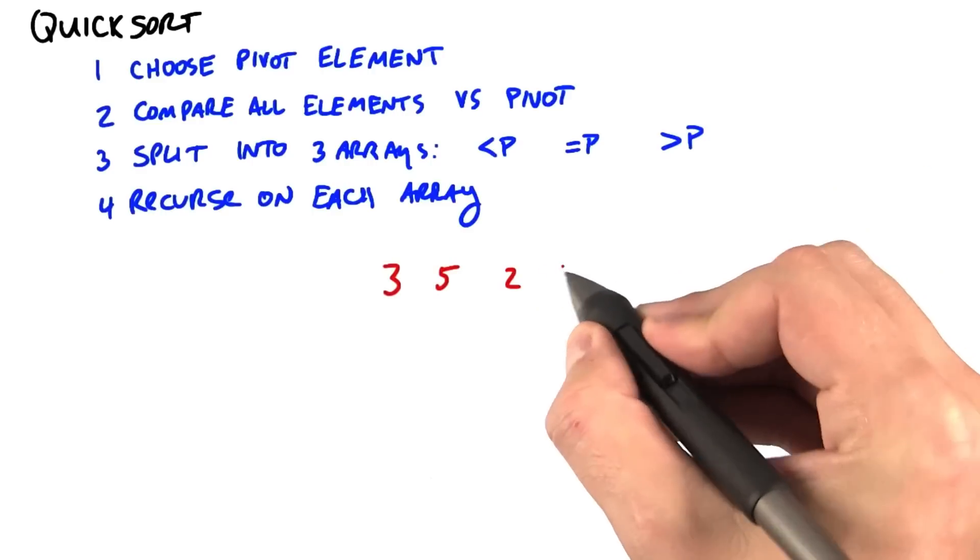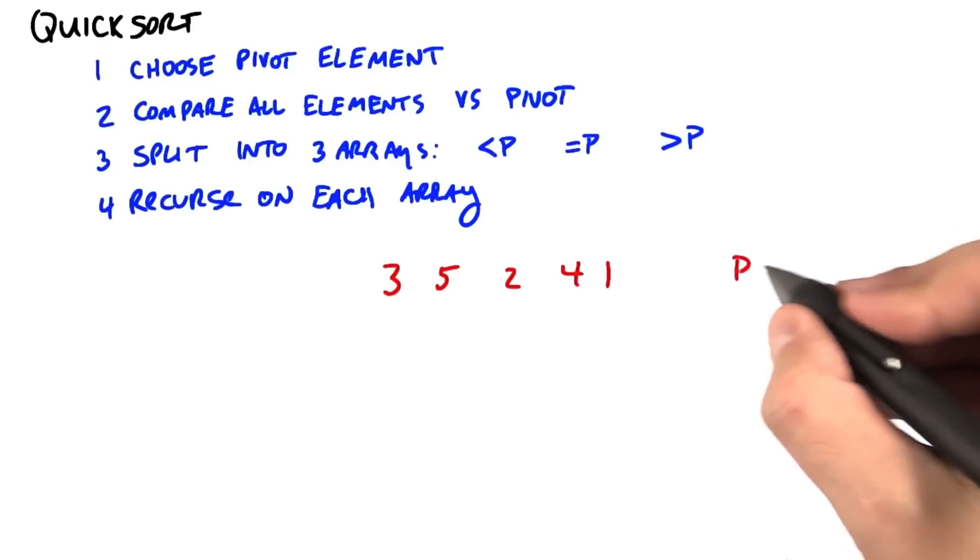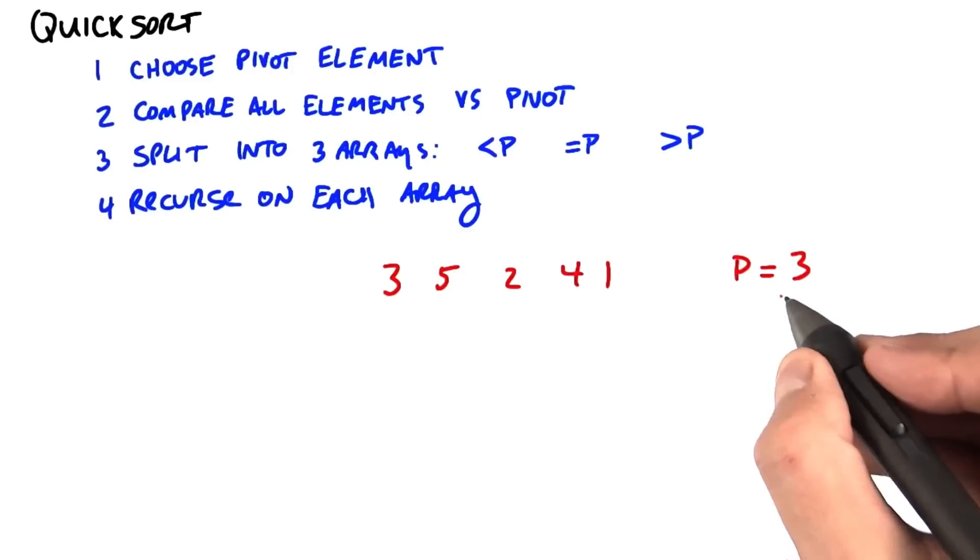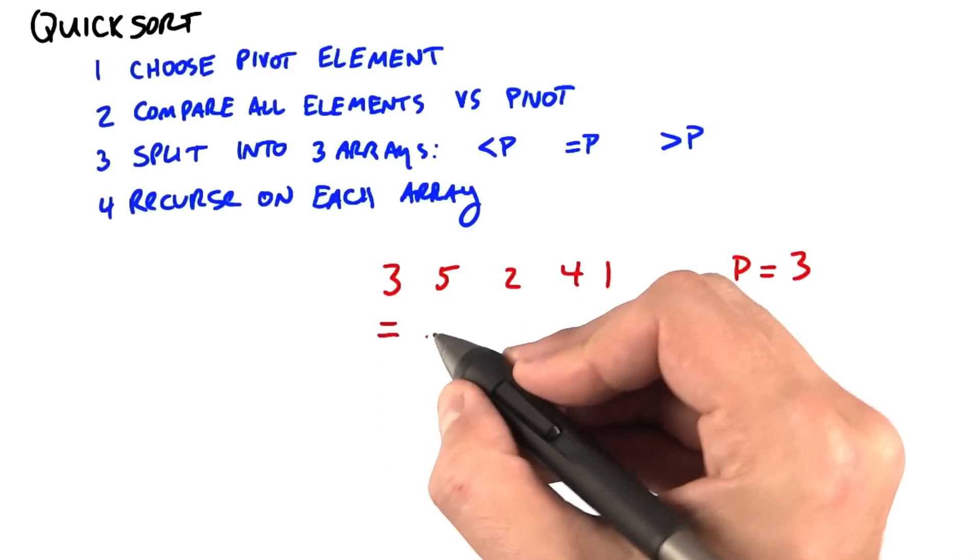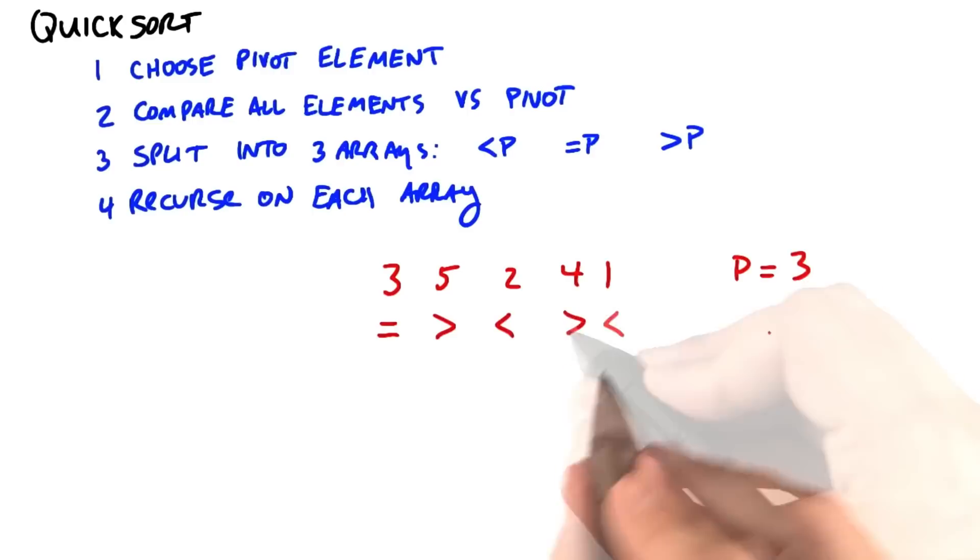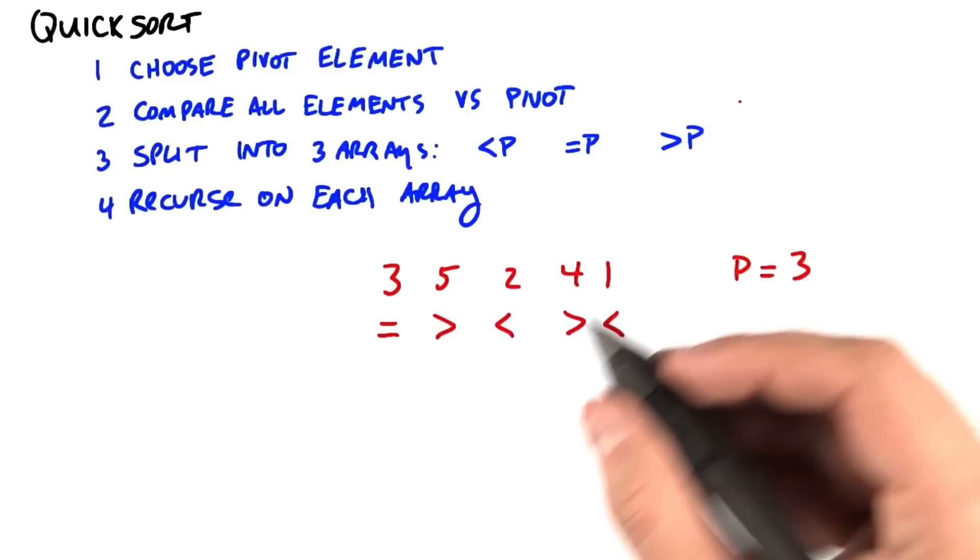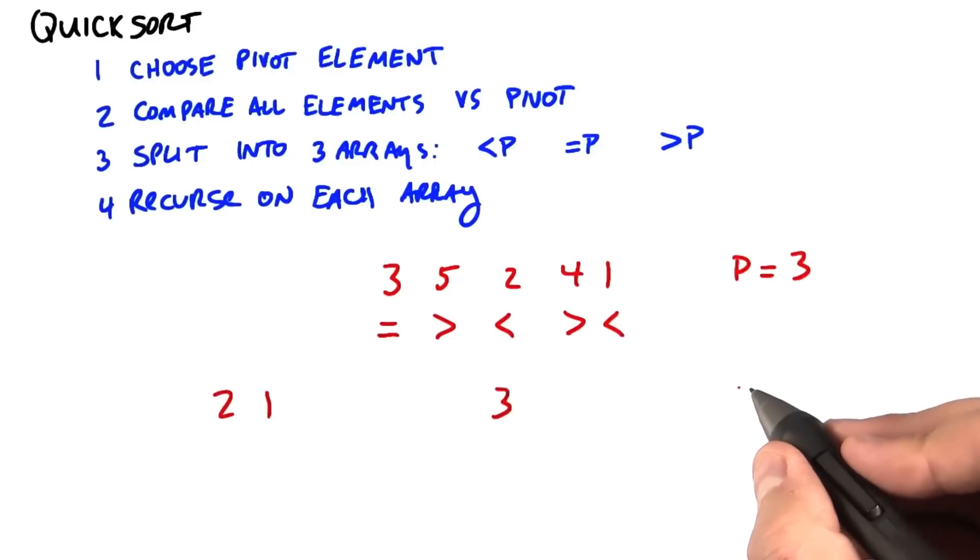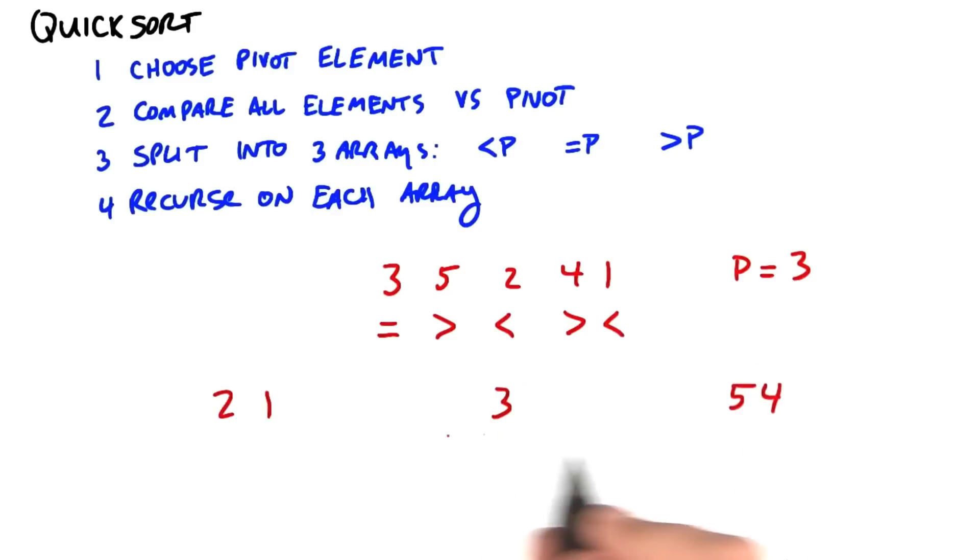As an example, let's look at a particular array and choose that the pivot is equal to 3. So what we're going to do here is compare each one of these elements to the pivot, and we're going to decide if they're equal to, greater than, or less than the pivot. Then we'll divide it into three arrays: those that are less than the pivot, those that are equal to the pivot, and those that are greater than the pivot. And we'll call QuickSort on each of these arrays and do the same thing.